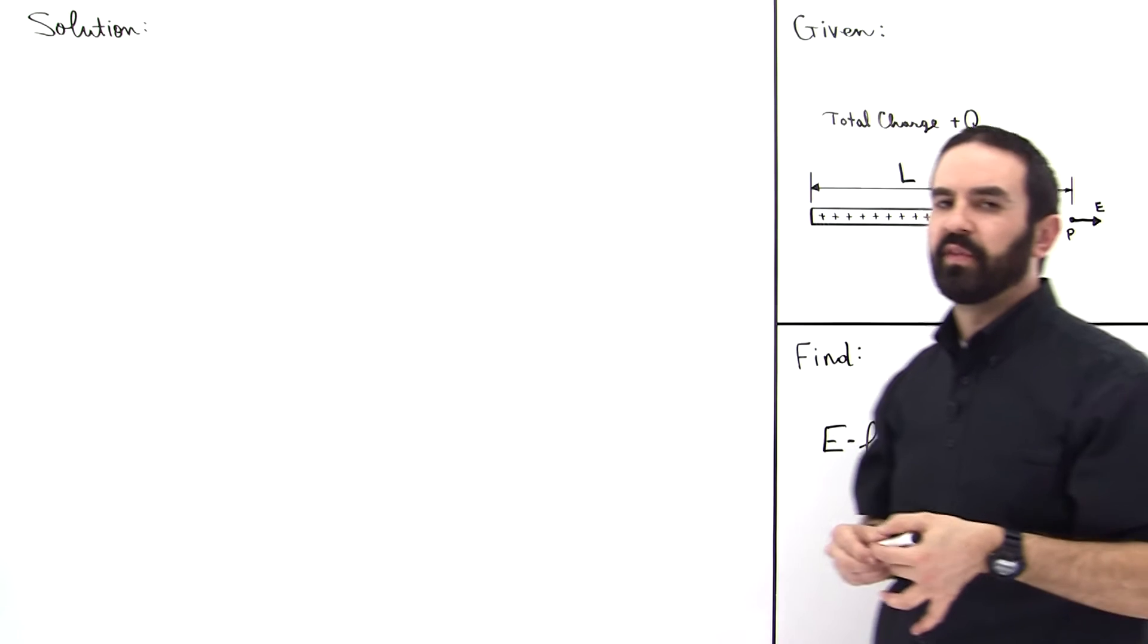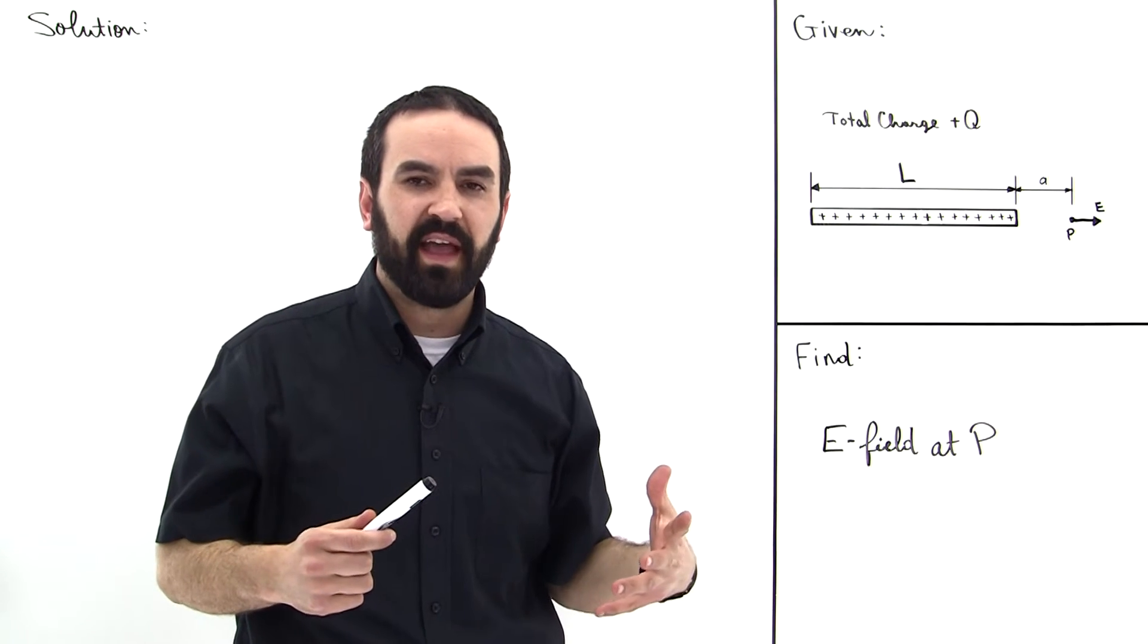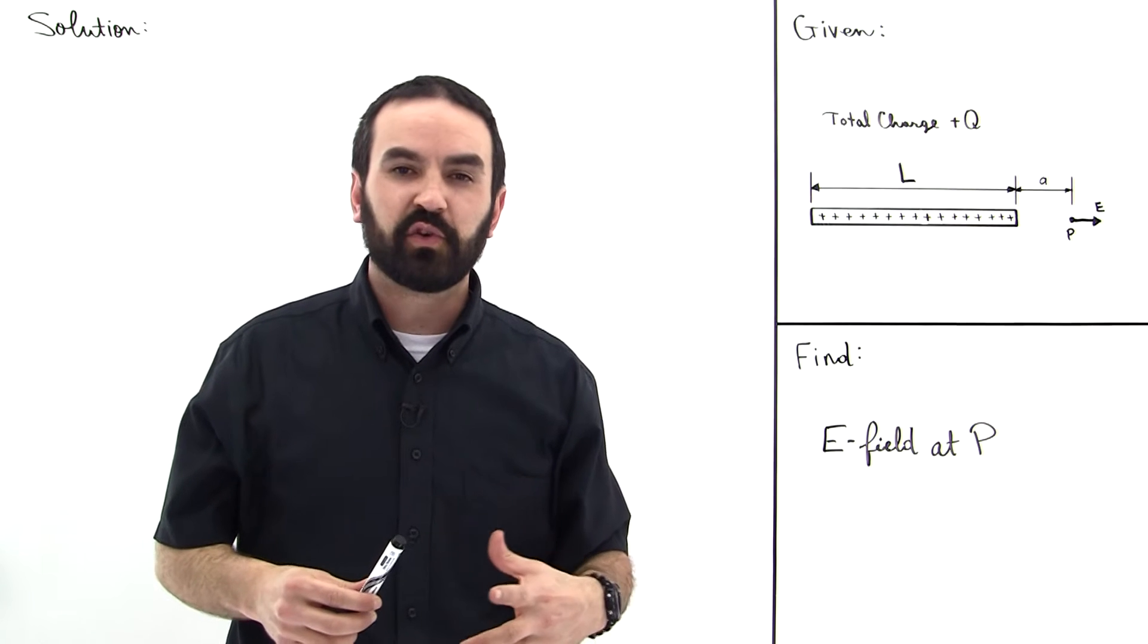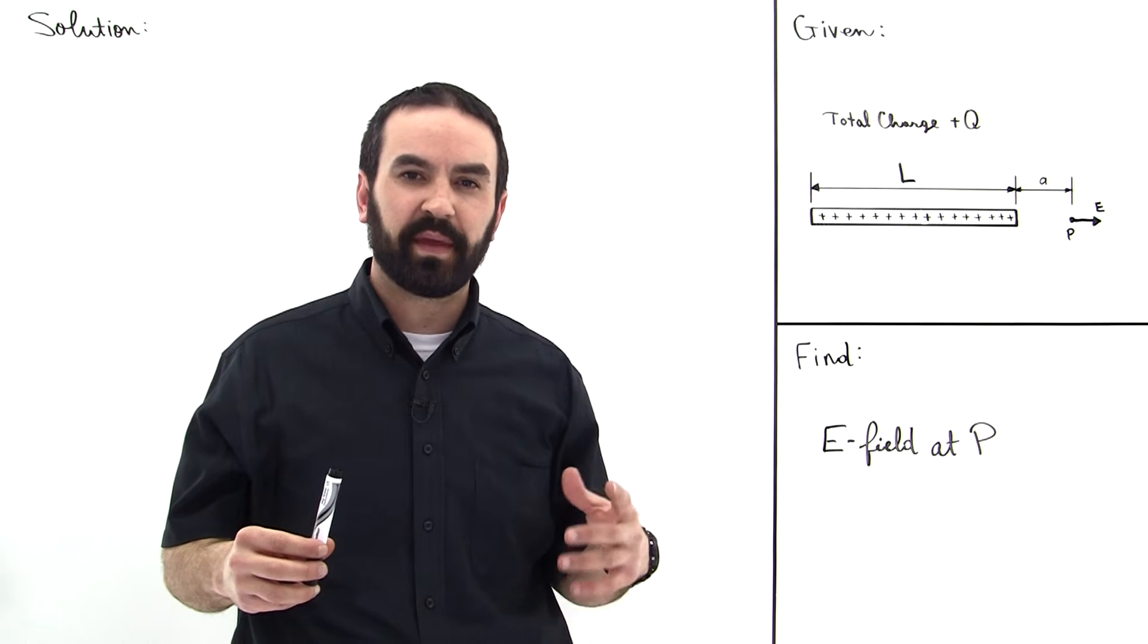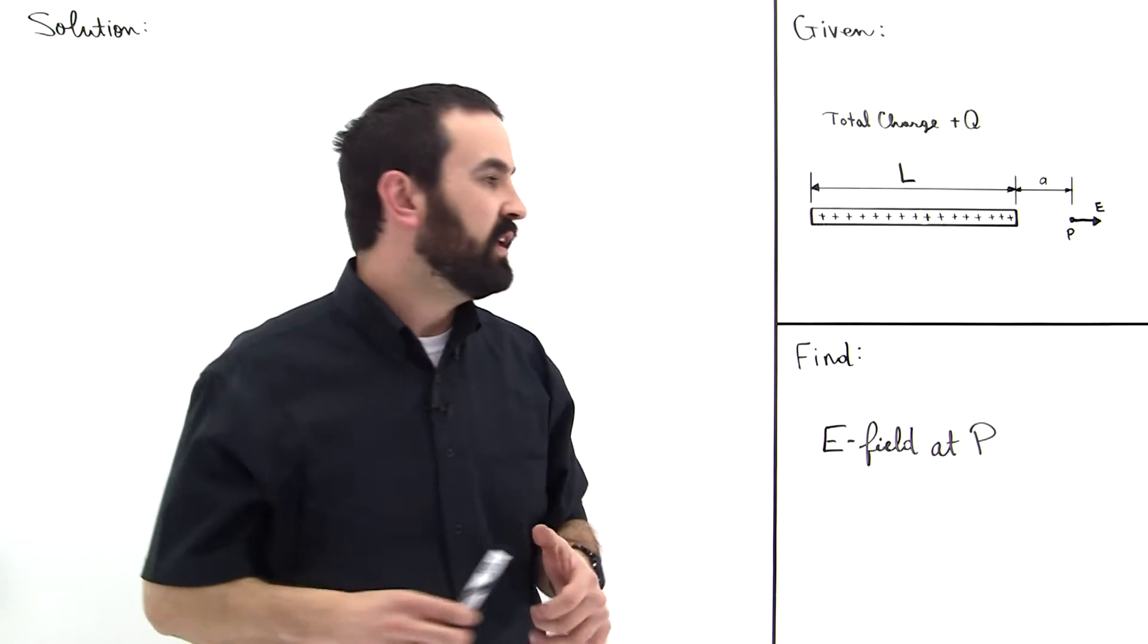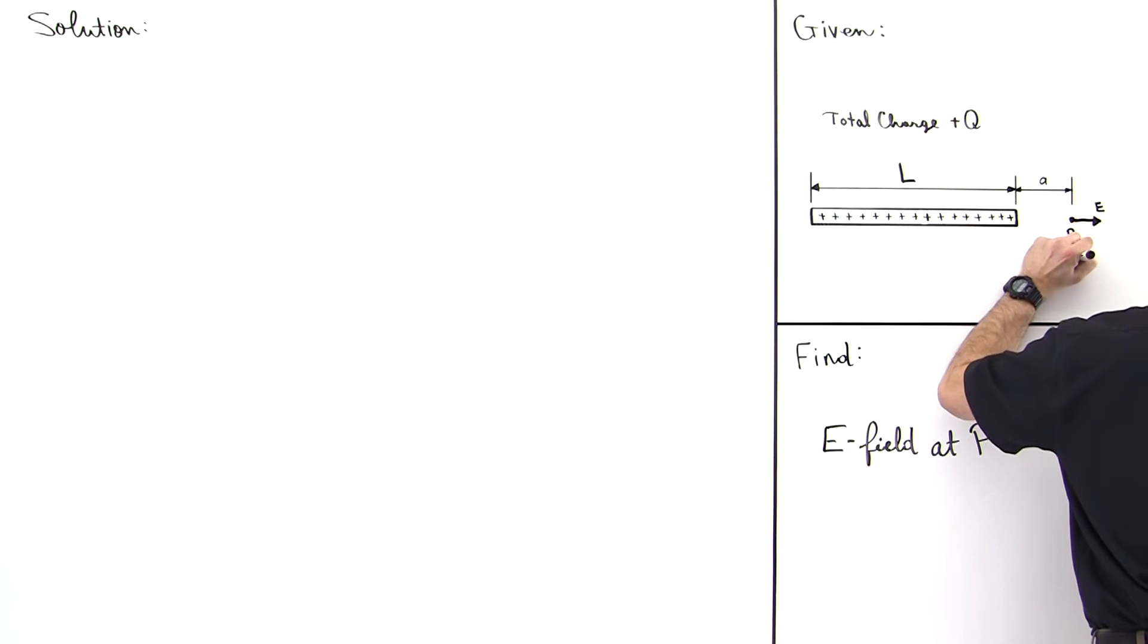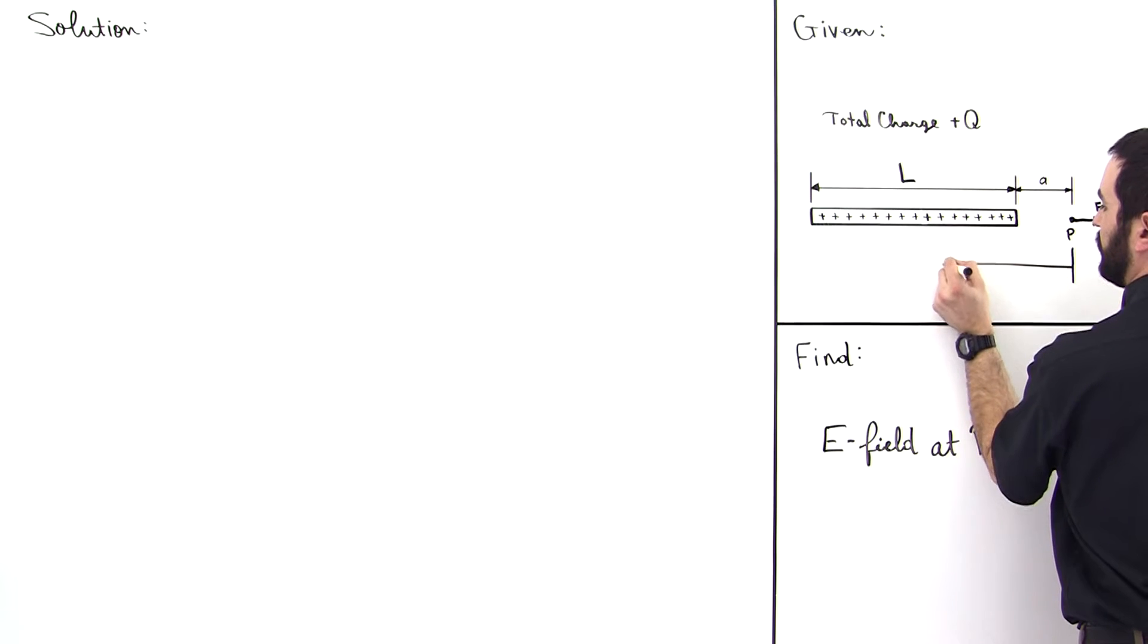Now that we've determined the direction of the electric field, and the sum that we end up writing down will be a scalar value, you can pick your origin to be at any convenient location. Usually a convenient location to pick as your origin is the location of consideration itself. So let's pick this to be our origin right here. We're going to integrate with respect to X this way.